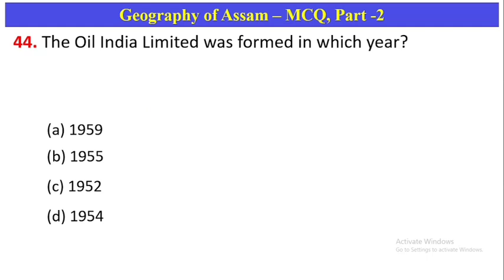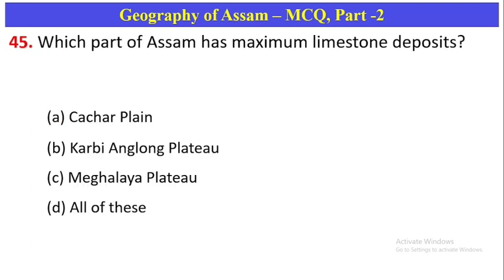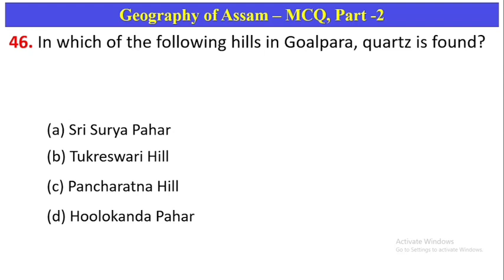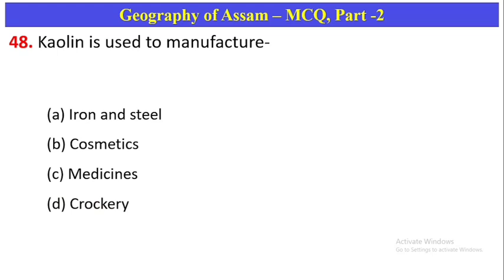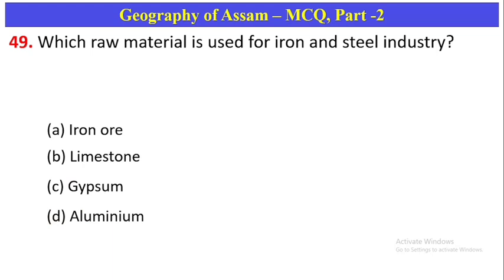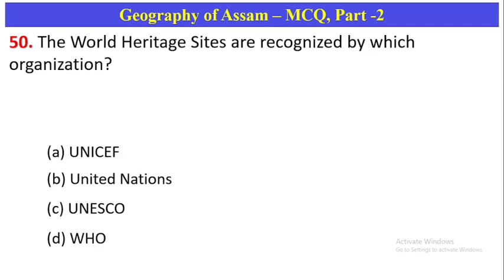In which year was the Assam Oil Company formed? 1899 — Option D. The Oil India Limited was formed in which year? Oil India Limited was formed in 1959 — Option A. Which part of Assam has maximum limestone deposit? The Karbi Anglong hills have maximum limestone — Option B. In which hills of Goalpara is quartz found? Panbari/Pansa rock hills of Goalpara — Option C. Pink granite has been discovered in which hill of Goalpara district? Pink granite is used to manufacture crockery — Option D. Which raw material is used for the iron and steel industry? Iron ore — Option A. World Heritage Sites are recognized by which organization? UNESCO — Option C.